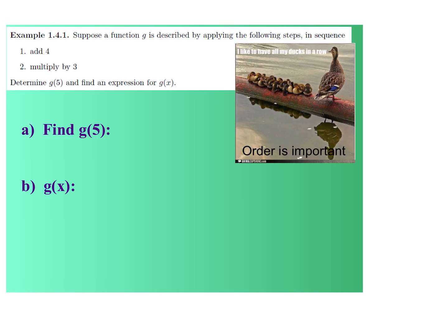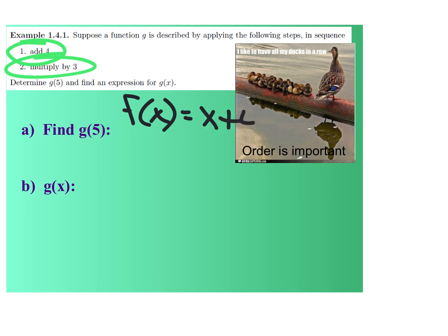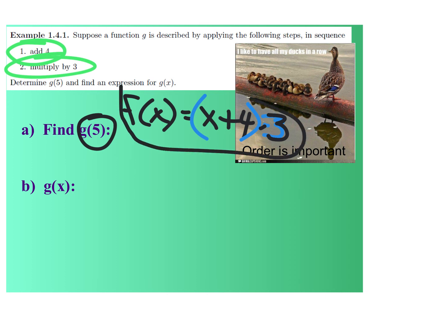Here is a function that adds 4 and multiplies by 3. Take x, add 4, then times by 3 in that order. To force the add-4 to be first, put it in parentheses: f of x equals 3 times (x plus 4). Once you have the equation, putting in 5 is straightforward — it's just that making the function in the first place is the only slightly hard part.